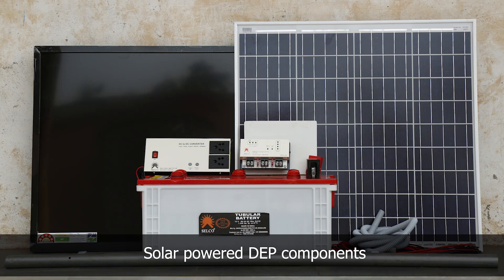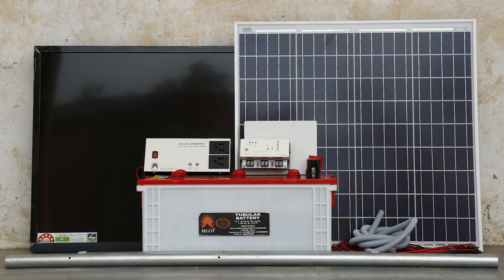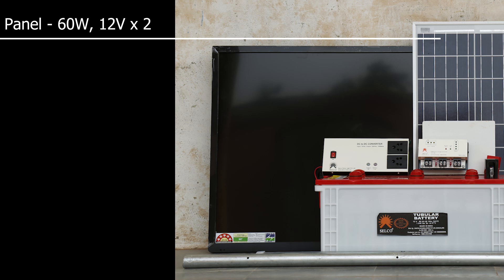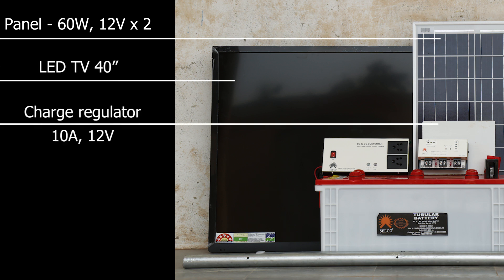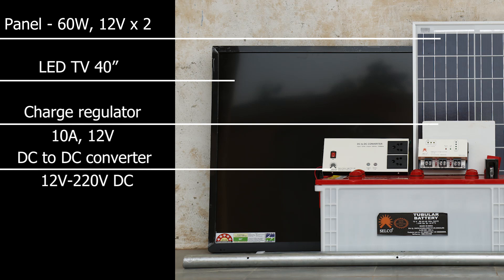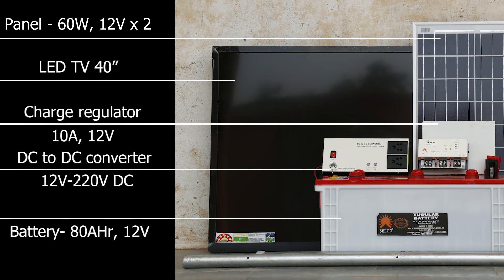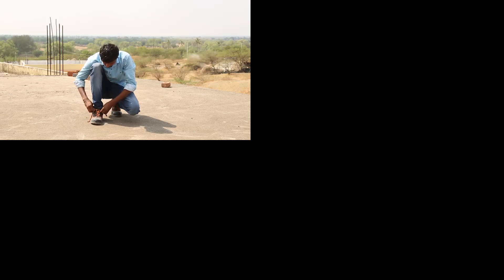Solar Powered Digital Education Program installation components: Panel 60 watt 12 volts, 2 numbers; 40 inch LED TV; Charge regulator 10 ampere 12 volts; DC to DC converter 12 volts DC to 220 volts DC; Battery 80 ampere per hour DC, 12 volts DC. The technician prepares for the installation.